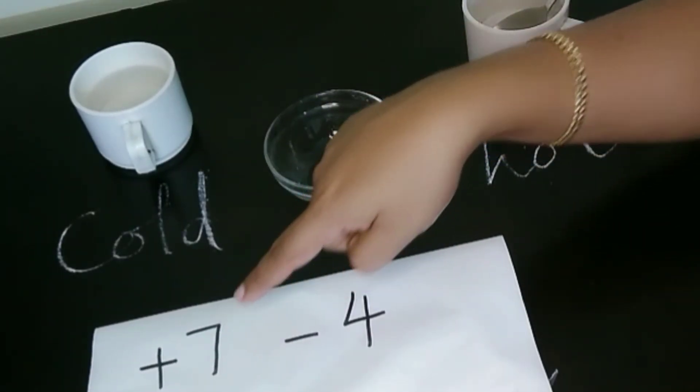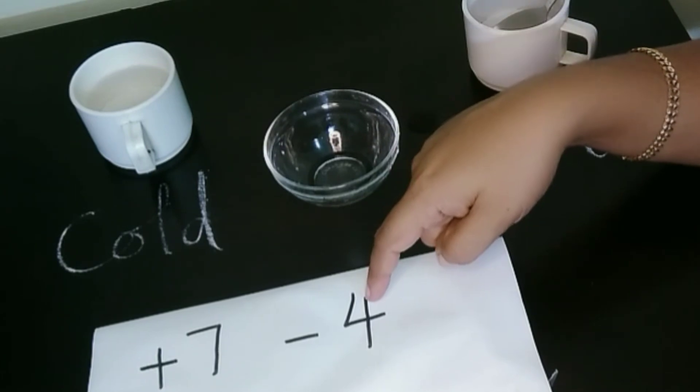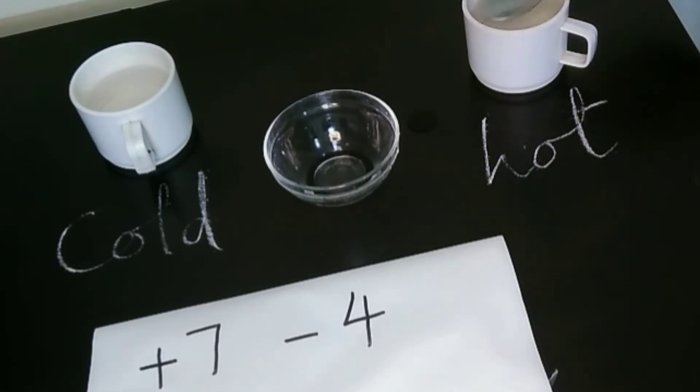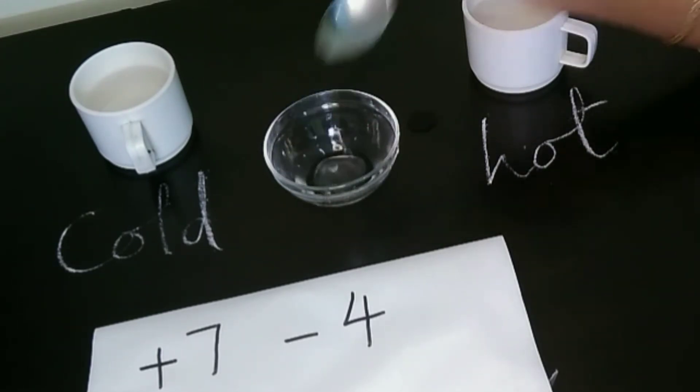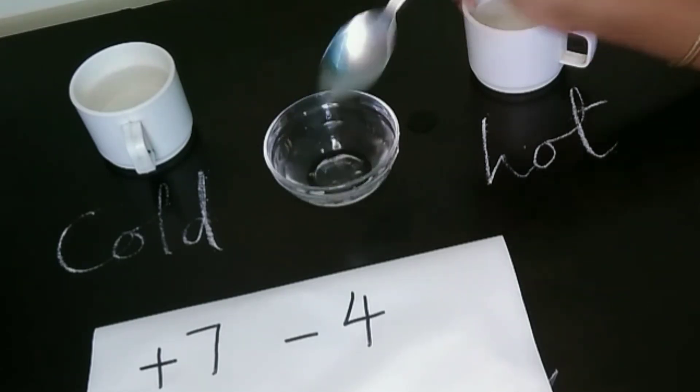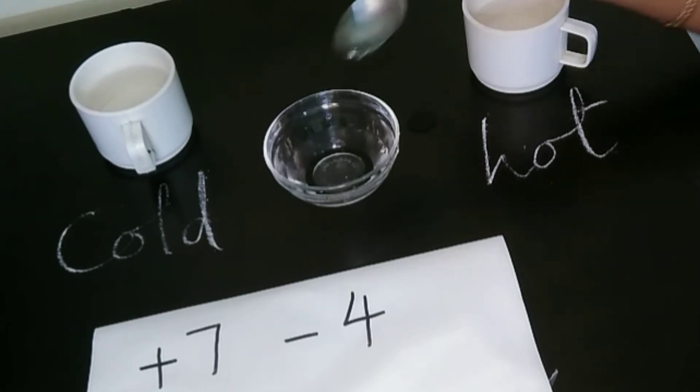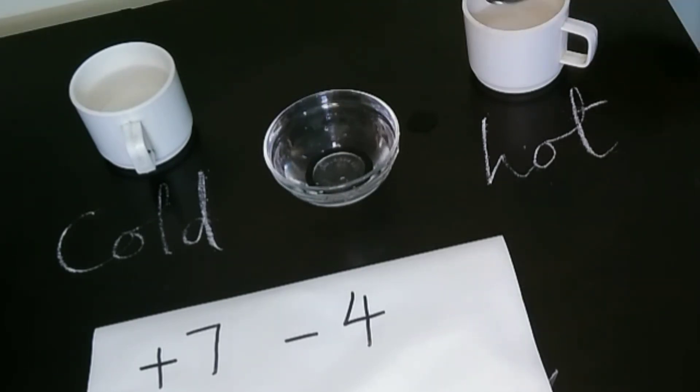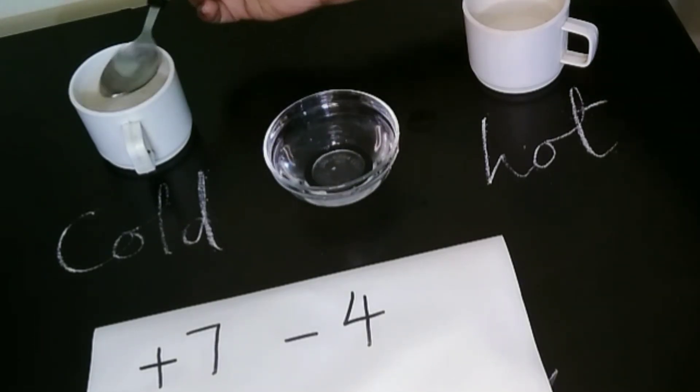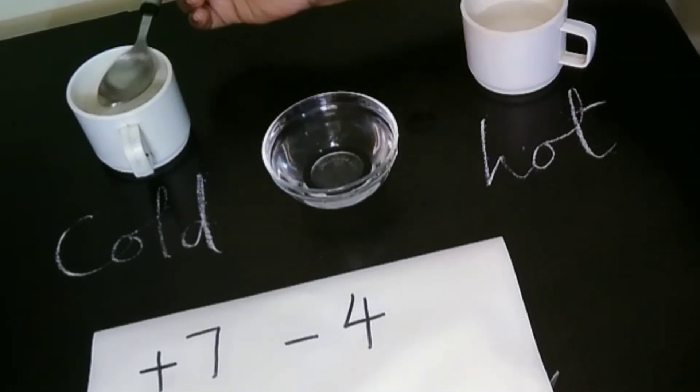Let's take another example here. +7 and -4. Here I am putting 7 spoons of hot water. 3, 4, 5, 6, and 7. Now, 4 spoons of cold water. 3 and 4.